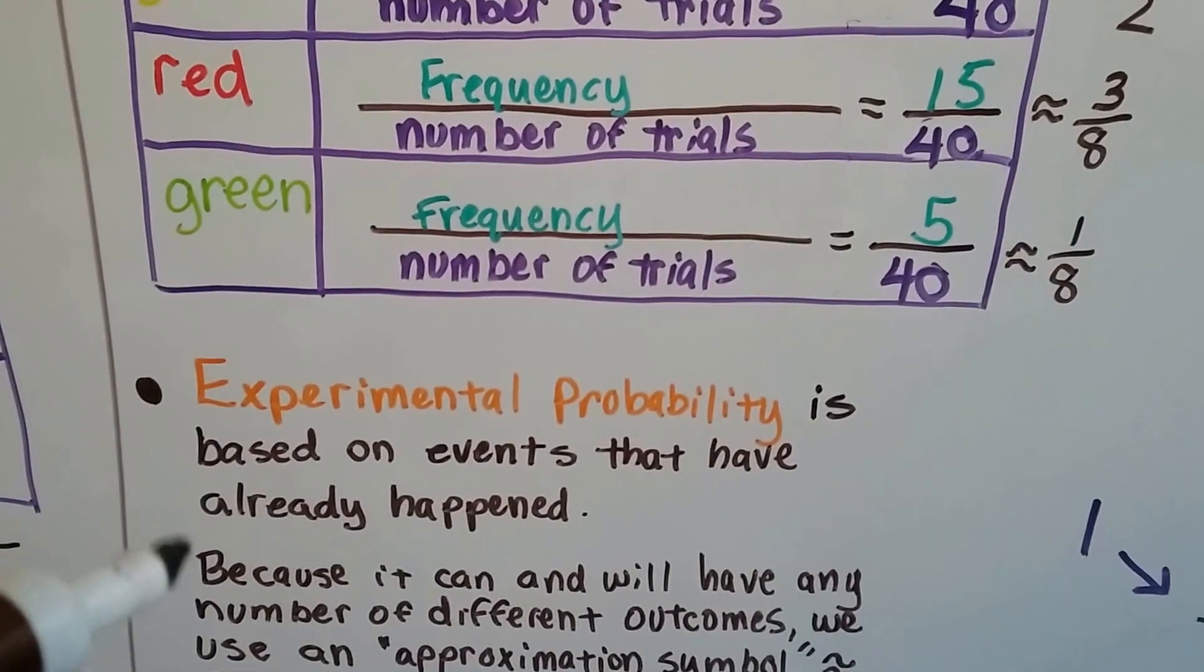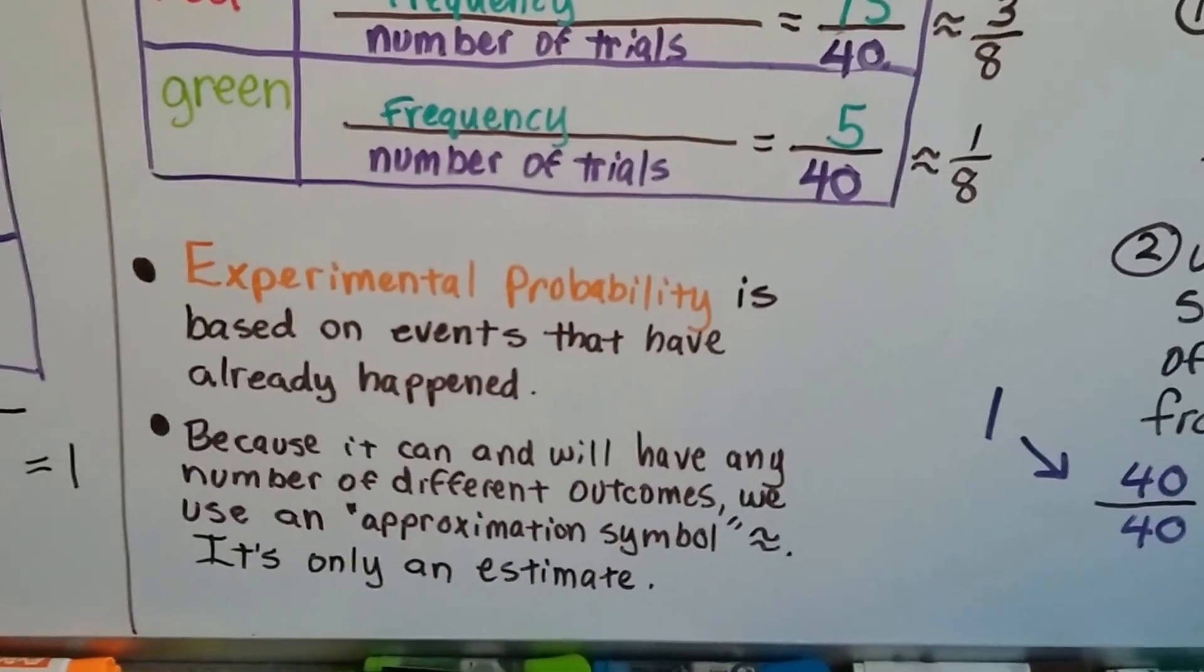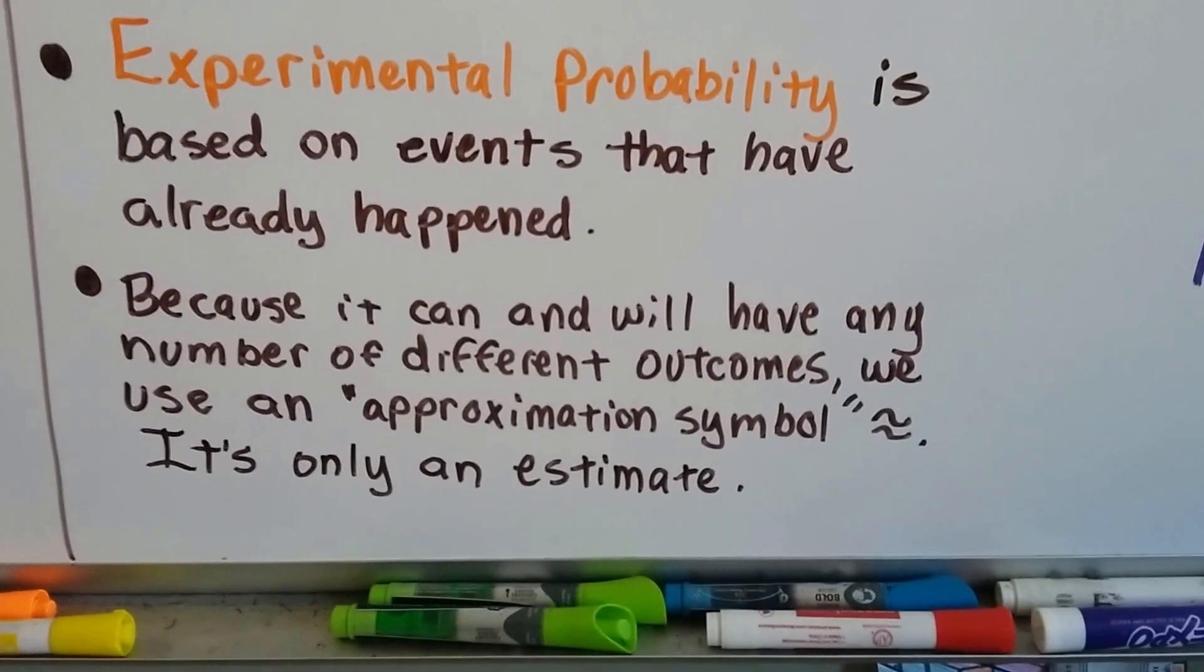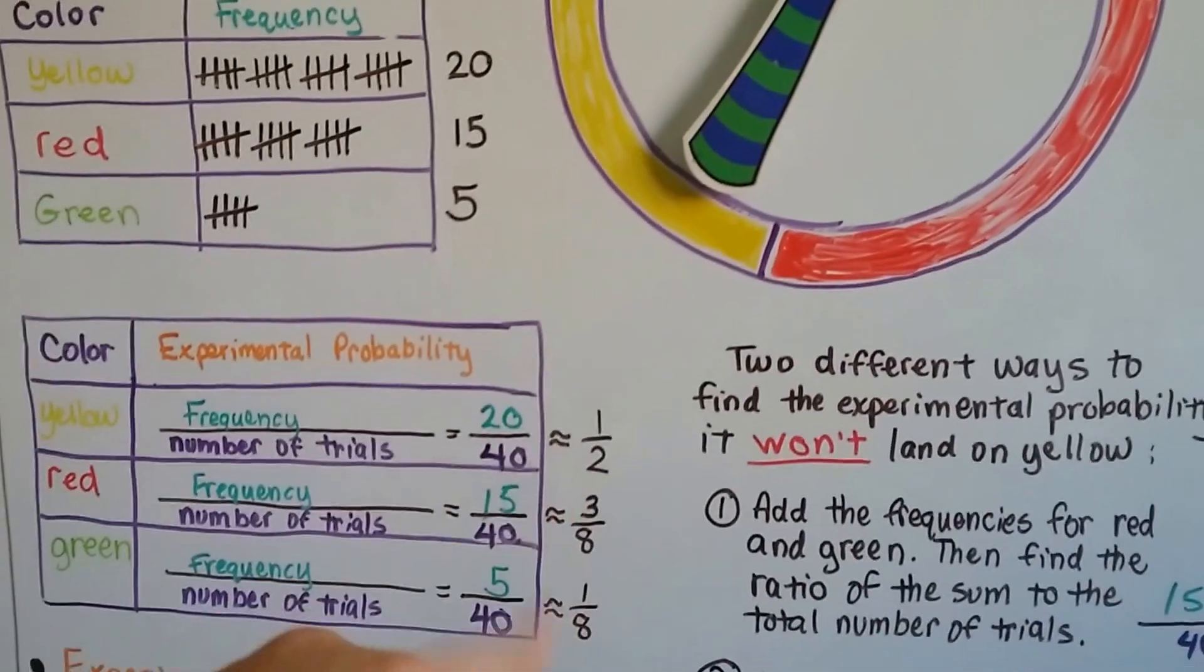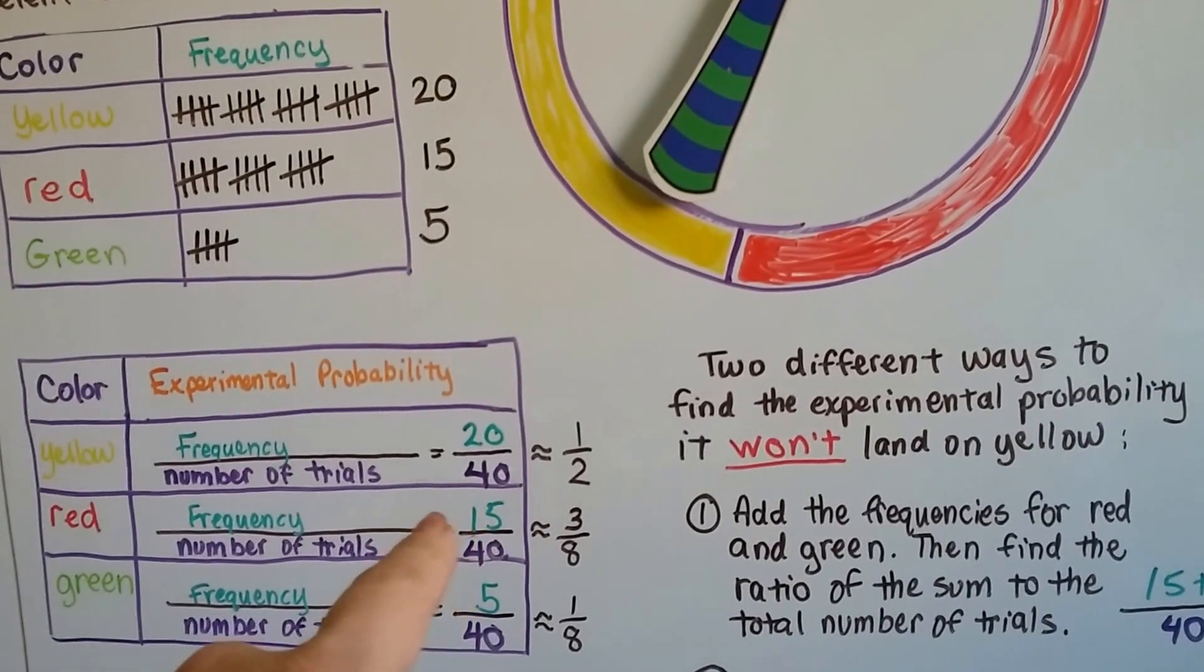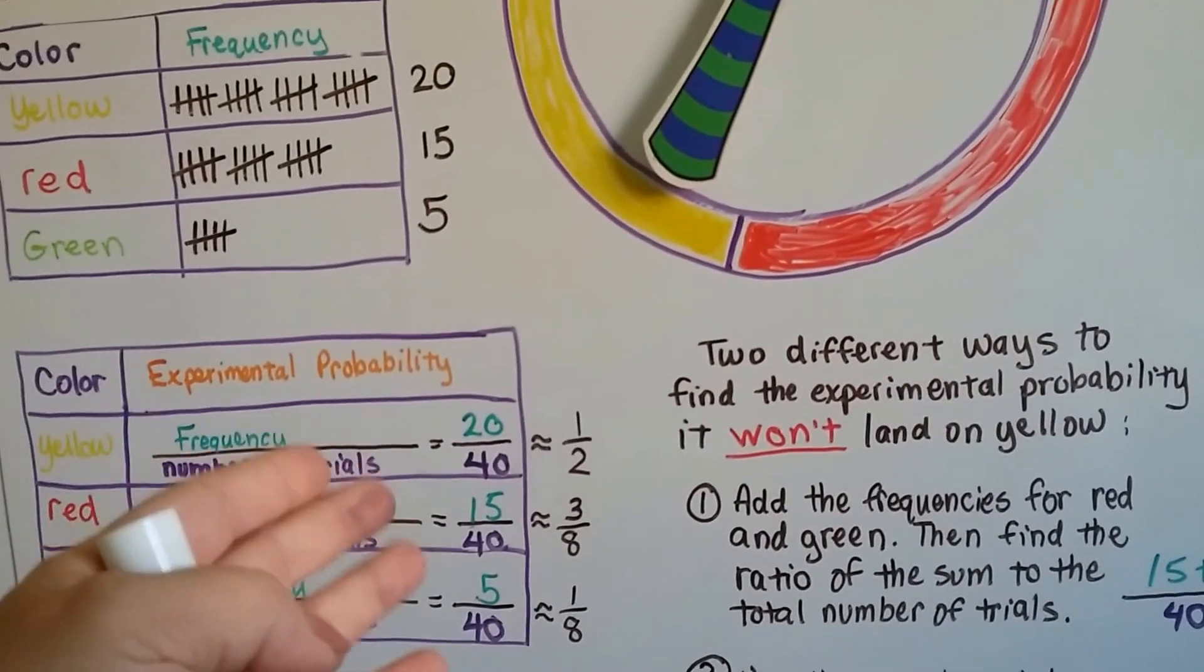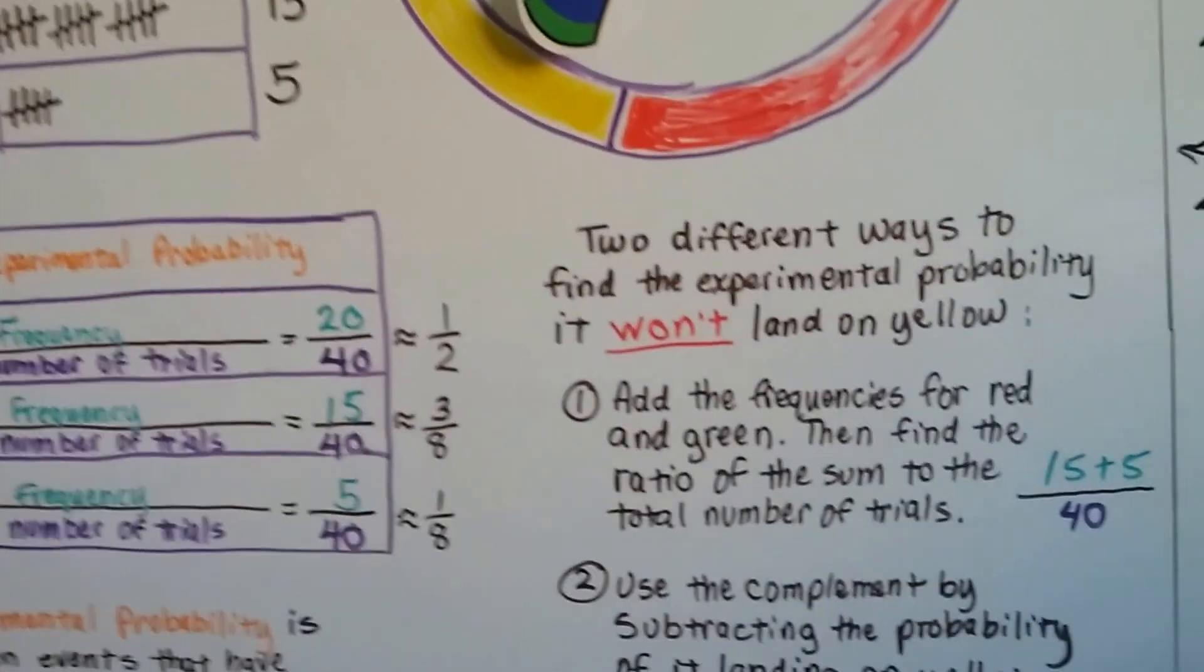So experimental probability is based on events that have already happened. And because it can and will have any number of different outcomes, we use that approximation symbol, because it's only an estimate. So if I did this again, it wouldn't be exactly this, would it? It might be 18 over 40, and this might be 14, and it might land on green more. We don't know. So if I kept doing it, I could have slightly different outcomes. So we put approximately.